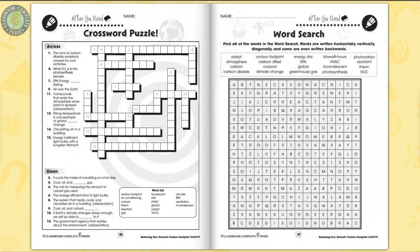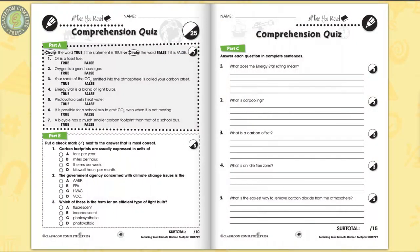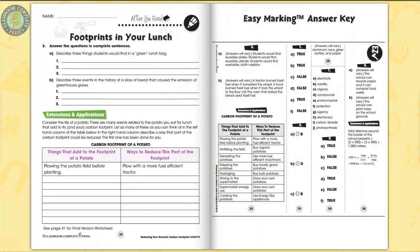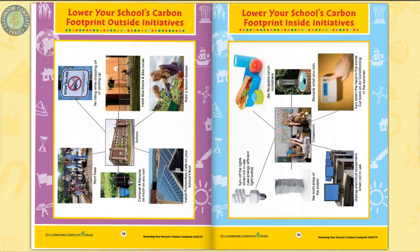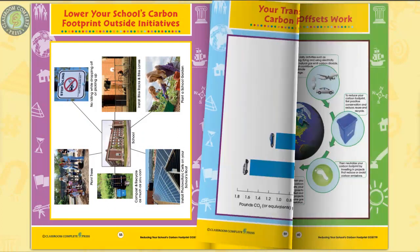Differentiated comprehension skills are measured by a crossword and word search puzzle, then a three-part comprehension quiz. The easy marking answer key works by lining up perfectly with the matching question pages. Six color mini posters completes the resource.